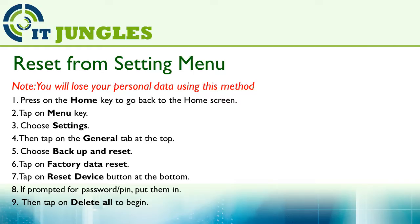First, press the home key to go back to your home screen. Then tap on the menu key at the bottom. From the popup, choose Settings. Then tap on the General tab at the top. Then choose Backup and Reset. Next, tap on Factory Data Reset. Tap on the Reset Device button at the bottom.